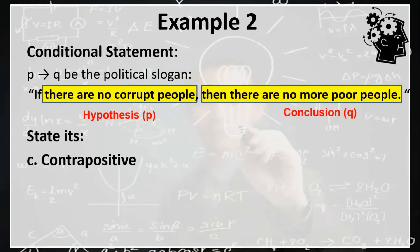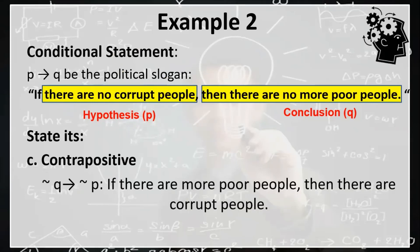And last, let's state its contrapositive. For contrapositive, our hypothesis is the negation of the conclusion of our conditional statement, and our conclusion is the negation of our hypothesis for the conditional statement. So our contrapositive statement is: if there are more poor people, then there are corrupt people.